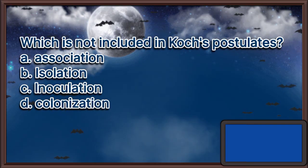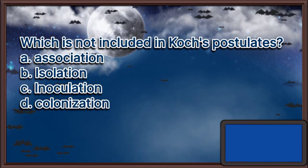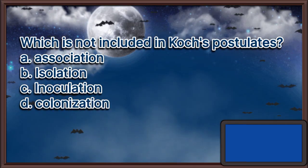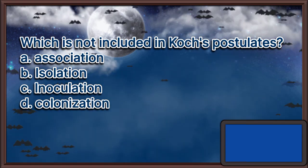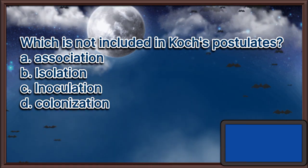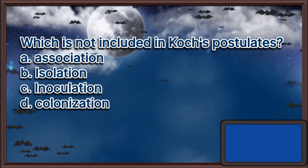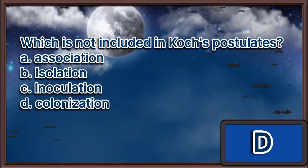Which is not included in Koch's postulates? A. Association, B. Isolation, C. Inoculation, D. Colonization. The answer is letter D.